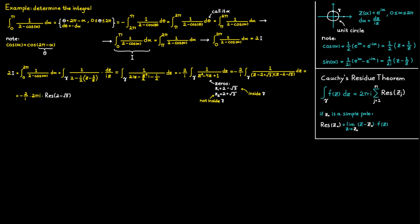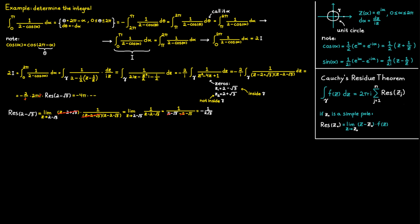Applying the residue theorem and cancelling the two i's, we see that the relevant pole at two minus the square root of three is a simple pole, so we use the simple pole formula. After cancelling common factors and taking the limit as z approaches two minus the square root of three, the two minus two terms cancel, leaving one divided by two times the square root of three as the residue. Inserting this result and simplifying gives 2 pi divided by the square root of three, which equals 2I.